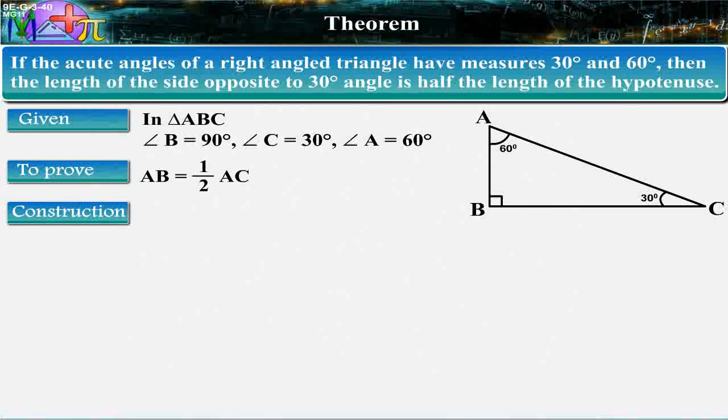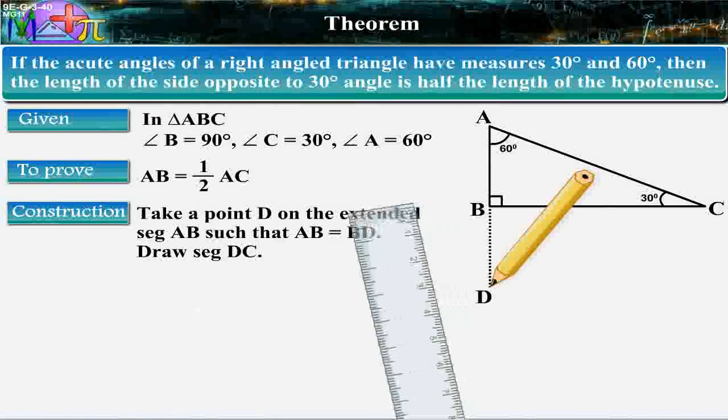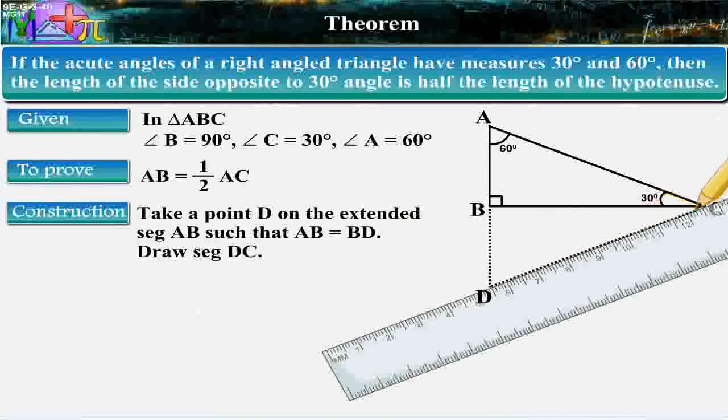Construction: Take a point D on the extended segment AB such that AB is equal to BD. Draw segment DC.